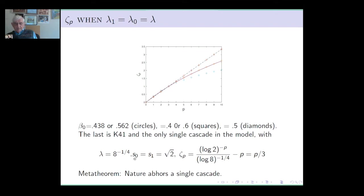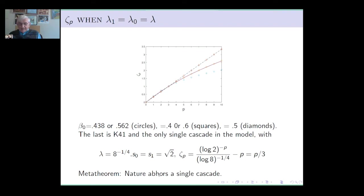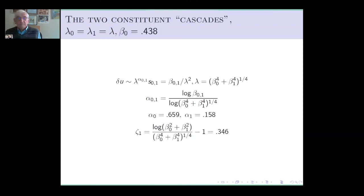What's interesting here is that when we get the Kolmogorov values p/3, the lambdas are the same, the stretching factors are the same — basically we have a single cascade. Now every other example in this toy that gives the experimental curve has more than one cascade — it has two cascades. So I state this sort of meta-theorem: within this little toy model, nature does not like a single cascade. The one case of a single cascade gives the Kolmogorov value, which is not the experimental value.